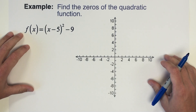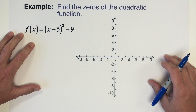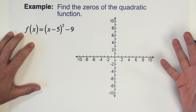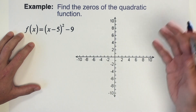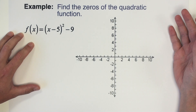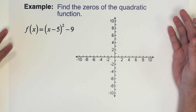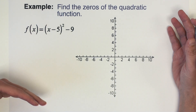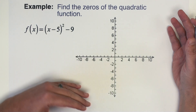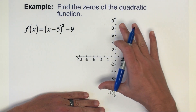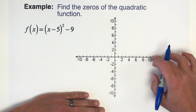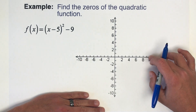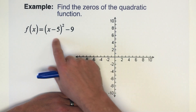We want to find the zeros of this quadratic function. Zeros are where the graph crosses the x-axis, so you might think a good way to solve this would be to graph it so we can see where it crosses the x-axis. Let's go ahead and do that.